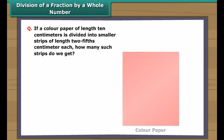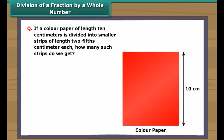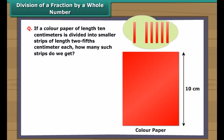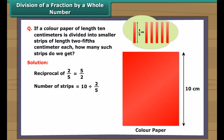Division example: a color paper of length 10 centimeters is divided into smaller strips of length two-fifths centimeter each. How many strips do we get? The reciprocal of two-fifths is five-halves, so 10 divided by two-fifths equals 10 multiplied by five-halves, which gives fifty-halves. Simplifying, we get 25 strips. Thus, to divide a whole number by any fraction, multiply that whole number by the reciprocal of that fraction.